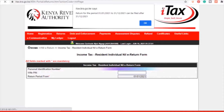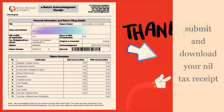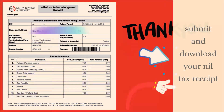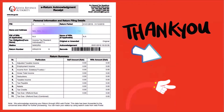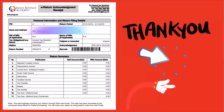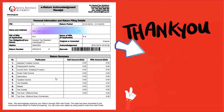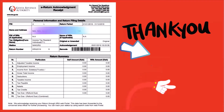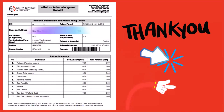Once you're done, make sure you download your returns filing receipt — this is what it looks like. If you have someone filing on your behalf, make sure they give you this return receipt.